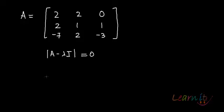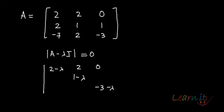So what is A minus lambda I? I am writing it directly — on the diagonal you will have each element minus lambda. So you get 2 minus lambda, 1 minus lambda, minus 3 minus lambda on your diagonals, and the other elements remain unchanged.